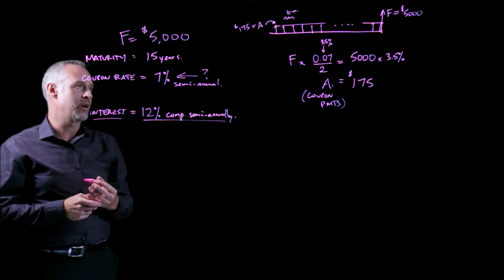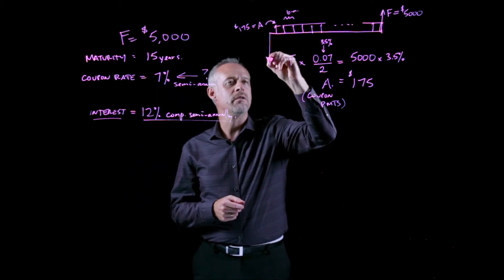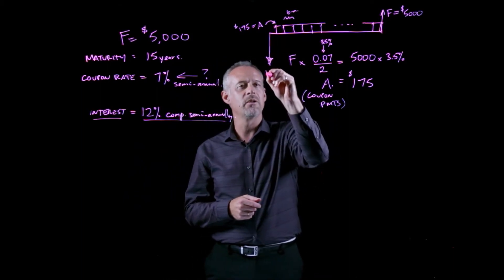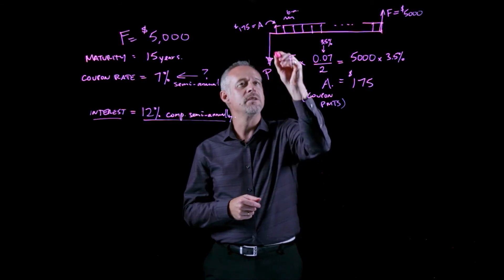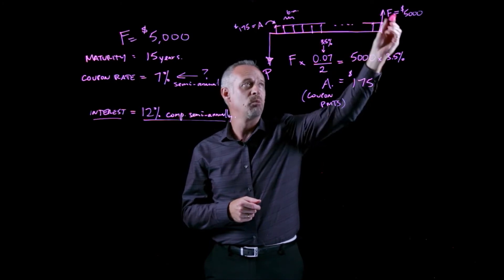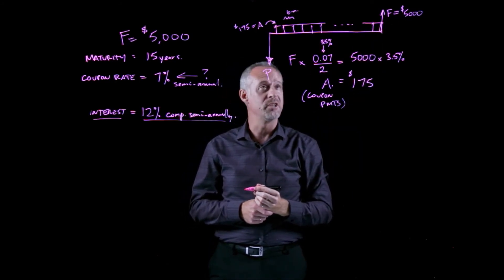So if I go ahead now and think, how do I calculate using our typical principles of equivalence, how do I calculate the P that is equivalent to this future stream of annuity payments plus this fixed future amount at the end of 15 years?